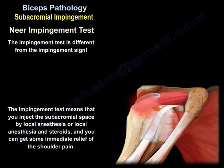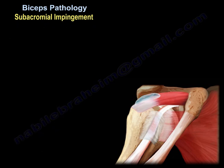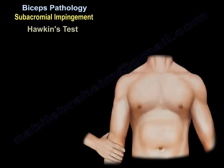The impingement test is different from the impingement sign. The impingement test means you inject the subacromial space with local anesthesia, or local anesthesia and steroids, and you can get some immediate relief of shoulder pain. That will be a positive impingement test when the pain symptoms are relieved and the patient feels better due to the injection.